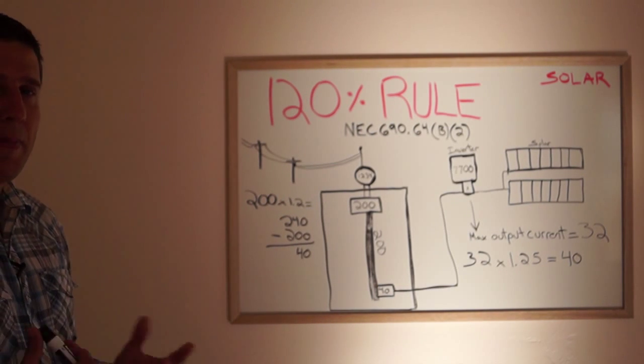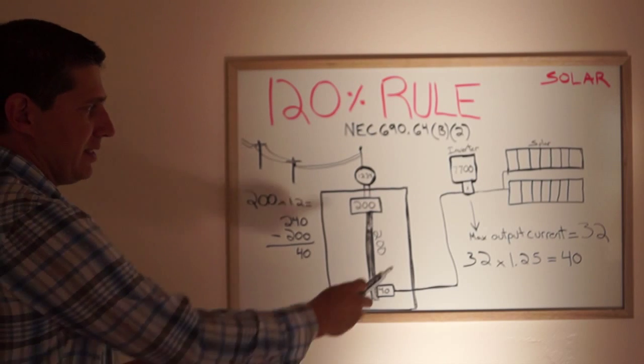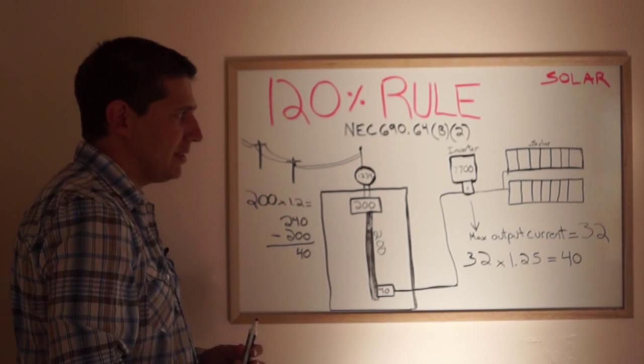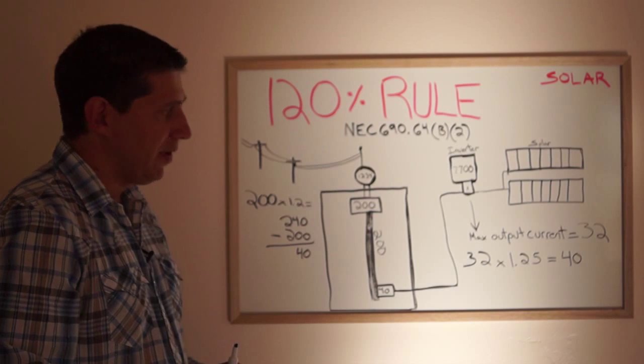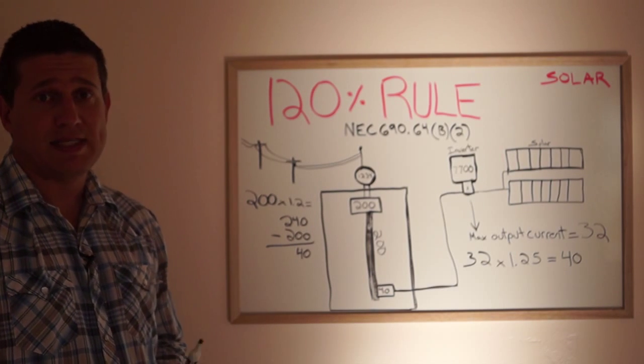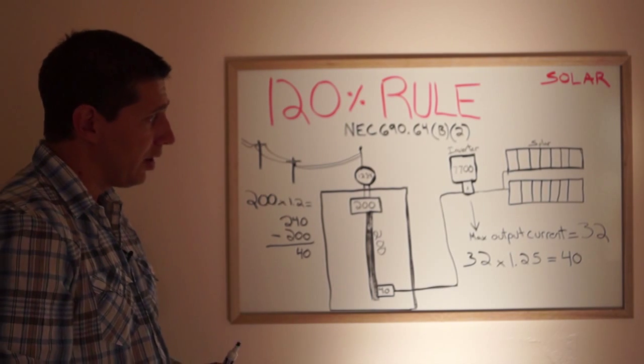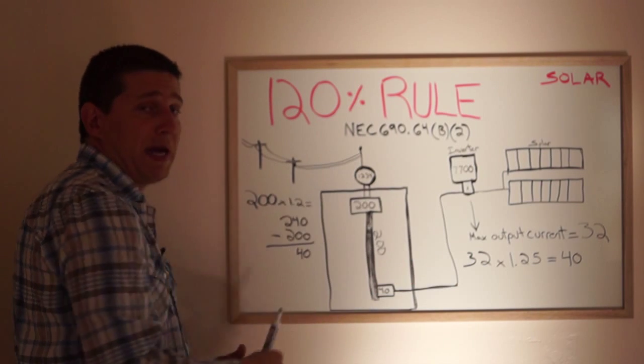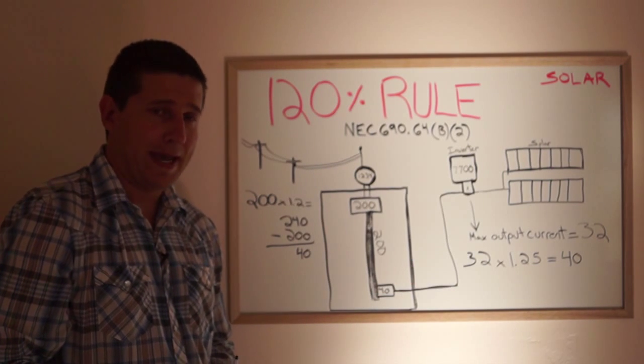Now what does that equate to? How big of a solar system? Well I've listed this out. The max system size we can put on here from the inverter is a 7700 watt inverter. That inverter on the spec sheet has a max output current of 32 amps.